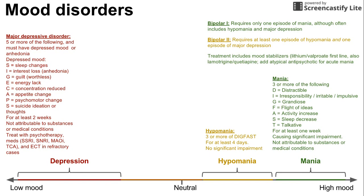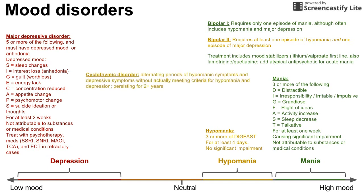There are a couple of disorders that fall in between, in the orange area between depression and hypomania. One is cyclothymic disorder — a person who alternates between periods of hypomania and depression that don't actually meet full criteria. They have some DIGFAST symptoms but not three for four days, and some SIG-E-CAPS symptoms but not five for two weeks. This must last about two years before being called cyclothymic disorder, and is usually treated with cognitive behavioral therapy, lithium, and antipsychotics.